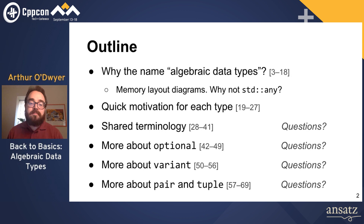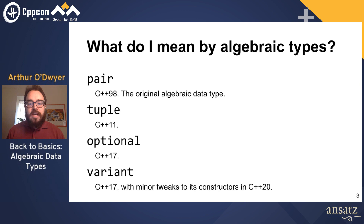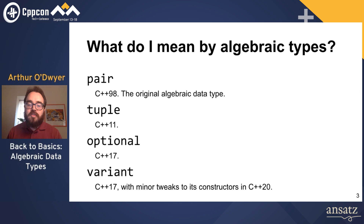What do I mean when I say algebraic data types? I'm talking about these four types in the standard library: std::pair, std::tuple, std::optional, and std::variant. Pair came in with the original STL — the original algebraic data type. Tuple came in with C++11, and then C++17 gave us optional and variant. Variant's constructors had little bug fixes in C++20, but it's largely unchanged.